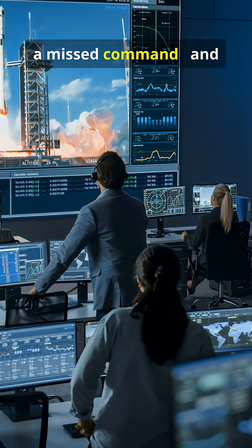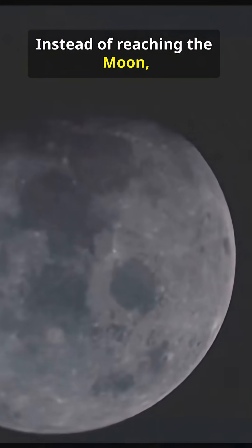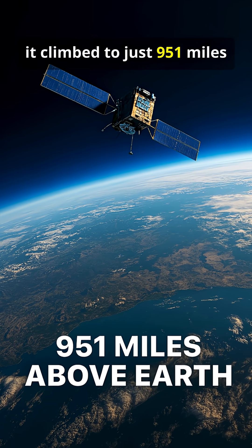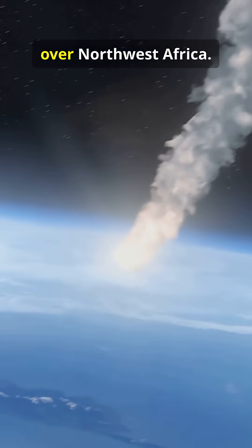A broken wire, a missed command, and Pioneer 2 was doomed. Instead of reaching the moon, it climbed to just 951 miles above Earth before burning up over northwest Africa.